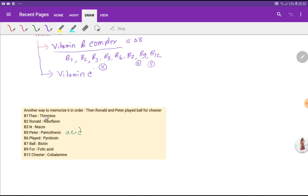The alternative name of vitamin B1 is thiamine, B2 is riboflavin, B3 is niacin, B5 is pantothenic acid, B6 is pyridoxin, B7 is biotin, B9 is folic acid, and B12 is cobalamin.